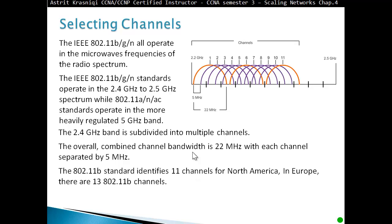802.11b standards identify 11 channels for North America. In Europe we have 13 channels. Channels 1, 6 and 11 are non-overlapping channels. You can see channel 1 is not overlapping with channel 6. It's overlapping with 2, 3, 4 and 5 but not with 6. So the least overlapping channels that you have are channel 1, channel 6 and channel 11, which we use most of the time.